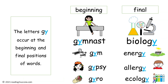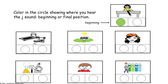Now have kids practice the G-Y soft G sound, reminding them that when Y usually comes after the G, it makes the G soft. There are two common categories: in the beginning position of a word, we have gymnast, gym, gypsy, and gyro. And for the final position, we have biology, energy, allergy, and ecology. Now have kids color in the circle showing where they hear the soft G sound — in the beginning or final position of the word.